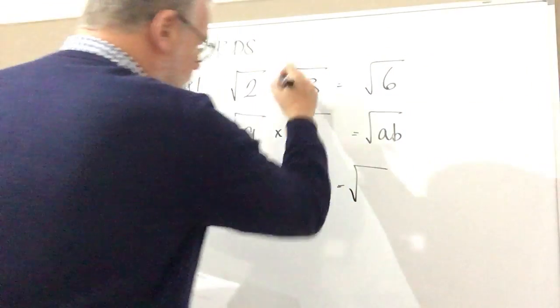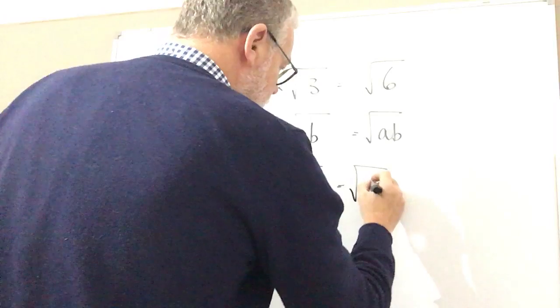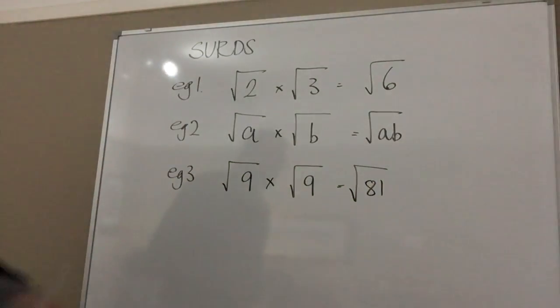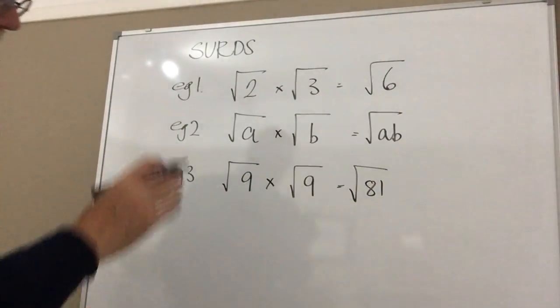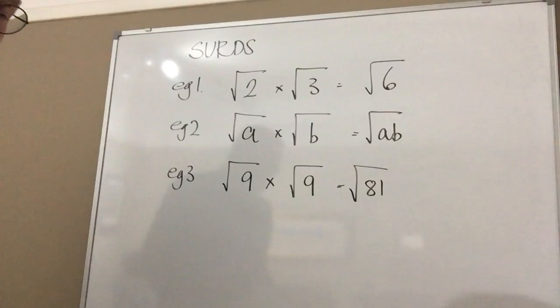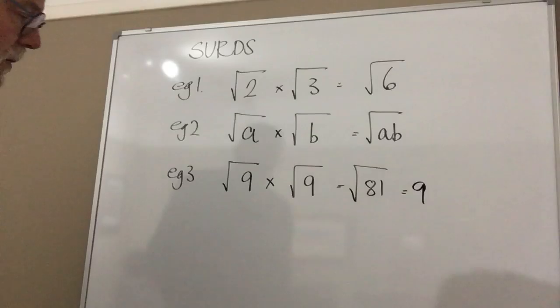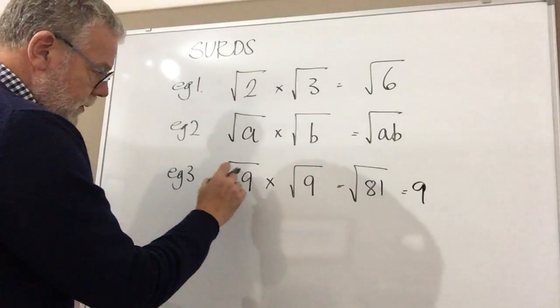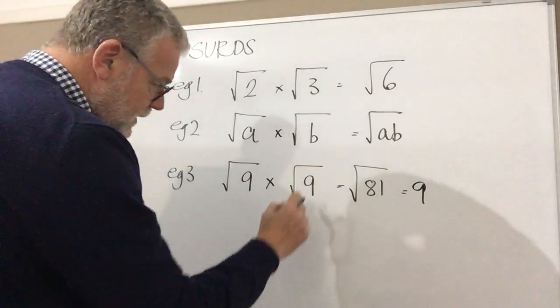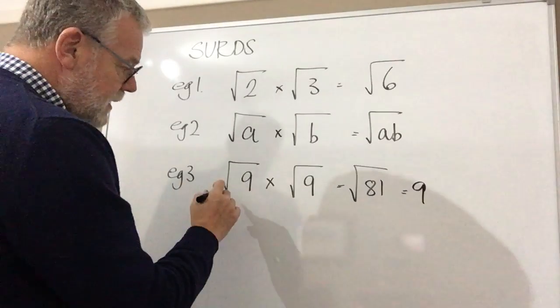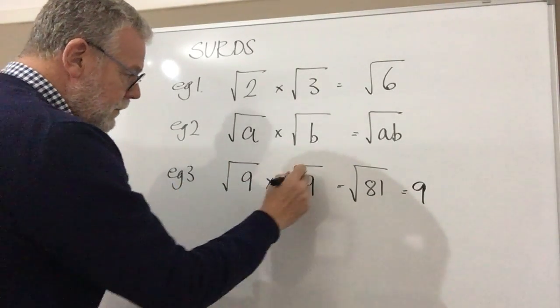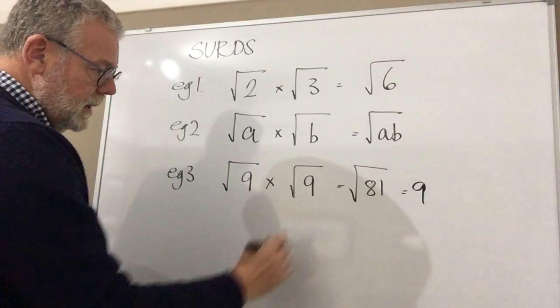You'd be right in saying using our principles that we've learned so far that it's root 81. Now you can tell me something here can't you? You can say that root 81, I know what the square root of 81 is, actually it's 9. So can you see what happens here? If you have a root of a number and multiply by root of the same number, it actually has the effect of removing the two root signs.